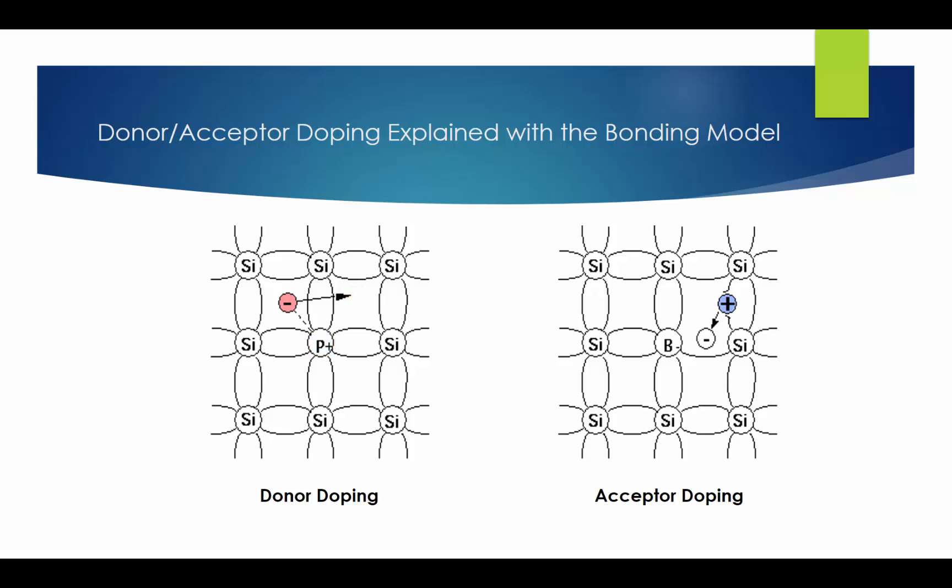This donor doping only increases the electron concentration, not the hole concentration. When the dopant atom loses one electron, it becomes a positive ion and is locked in place by the four covalent bonds. So, the release of the 5th electron doesn't break any atom-to-atom bonds, thus doesn't produce holes.